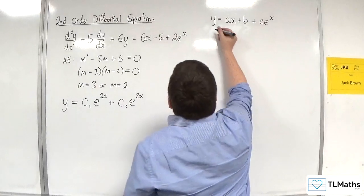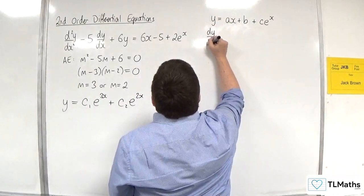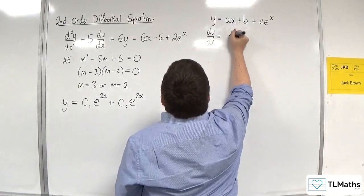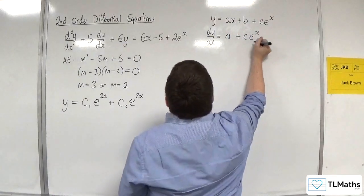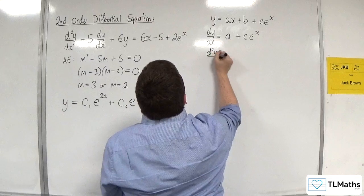So I need dy by dx, which would be a plus ce to the x, and I need d²y by dx squared, which would just be ce to the x.